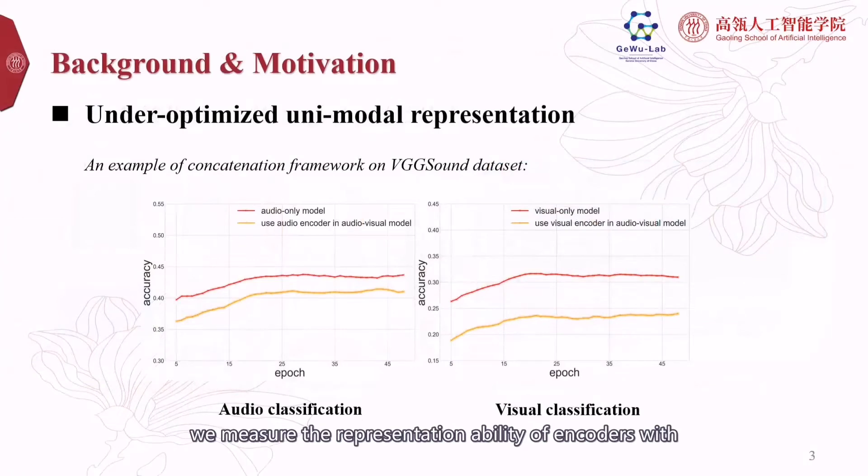we measure the representation ability of encoders with linear probing. As shown in the figure, unimodal performance in multimodal learning—the yellow line—is worse than that of the unimodal method—the red line—especially in visual. So we know that under-optimized unimodal representations exist in multimodal learning methods.